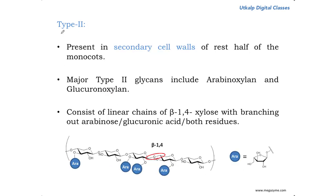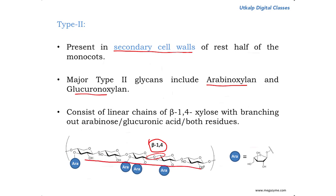Type 2 hemicelluloses are present in the secondary cell walls of the remaining half of the monocots. The major Type 2 hemicelluloses include arabinoxylans and glucuronoxylans. Similar to Type 1, here you have beta-1,4 unbranched chains of xylose, with branching at the sixth carbon consisting of either arabinose units or glucuronic acid units, linked via beta-1,6 linkages.